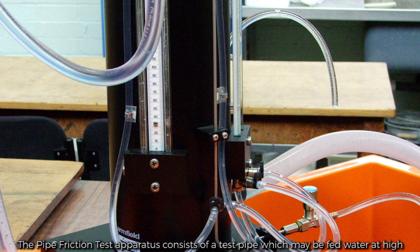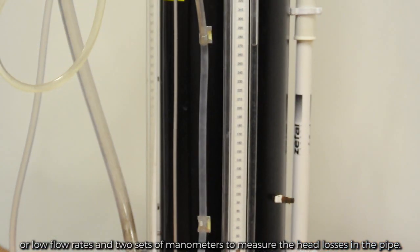The pipe friction test apparatus consists of a test pipe, which may be fed water at high or low flow rates and has two sets of manometers to measure the head losses in the pipe.